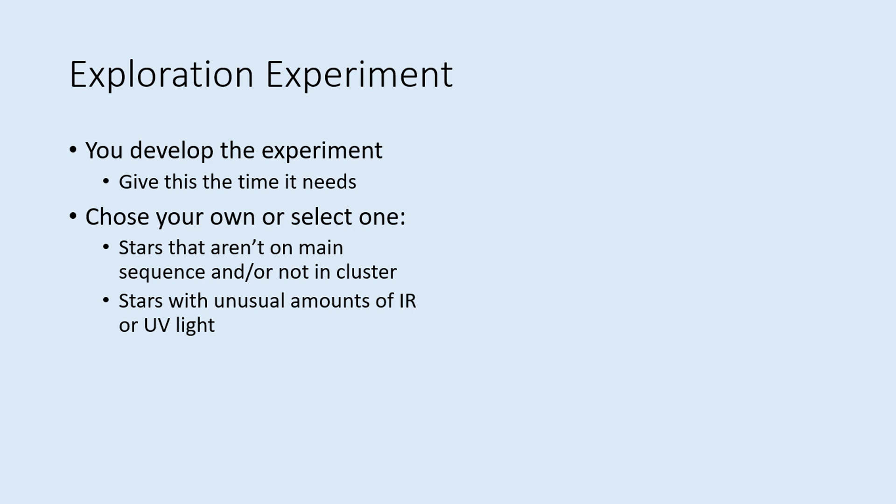Whether you pick one of the options we suggest or come up with one of your own, you'll need to do a write-up that includes your question and a hypothesis that states what you expect and why. Then you'll need to describe all the steps you take. This should be the sort of detailed, step-by-step description that would allow someone else to duplicate your work. Your write-up should also include all the data you take, including any graphs or histograms you create to test your hypothesis. Finally, include your conclusions where you discuss whether your data supported your hypothesis or not and what went right and wrong in your exploration experiment.